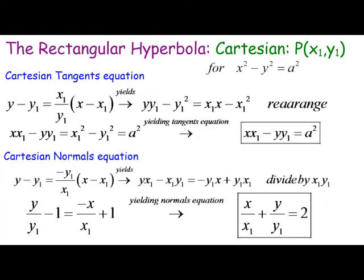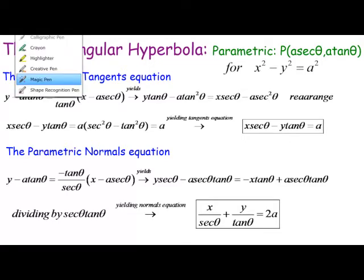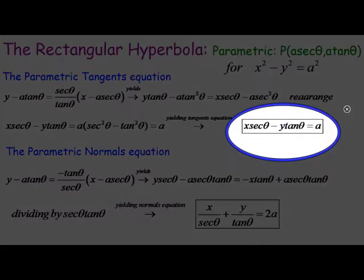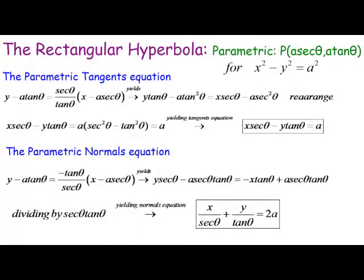These are the parametric equations. The parametric tangent is x·sec theta minus y·tan theta equals a. And the parametric normal is derived using y minus y₁ equals m(x minus x₁), the equation of a line with a gradient and a known point, then simplified. The equations are similar to those for the normal hyperbola.